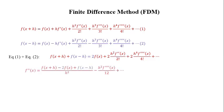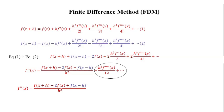Rearranging to find f''(x): f''(x) = [f(x+h) − 2·f(x) + f(x−h)] / h² − h²/12 · f''''(x) + higher order terms. Considering only the first term and neglecting higher order terms, this expression has a truncation error of order h². This final expression is called the central difference formulation for second-order derivatives.